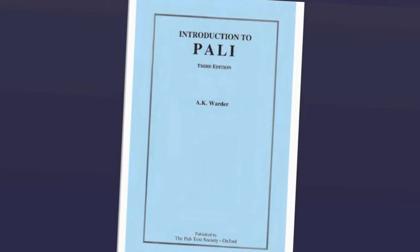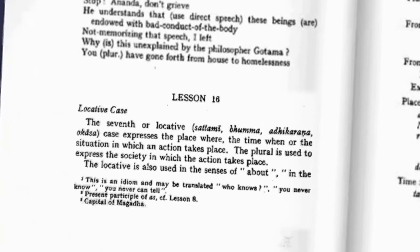Hello and welcome to this companion series to A.K. Warder's Grammar Guide, An Introduction to Pali. Today we come to lesson 16, and in this lesson we cover three sizeable subjects: the locative case, future passive participles, and kamadharaya compounds. There's a menu down in the description below, so you can jump between the sections and even re-watch if you wish. So let's get started.